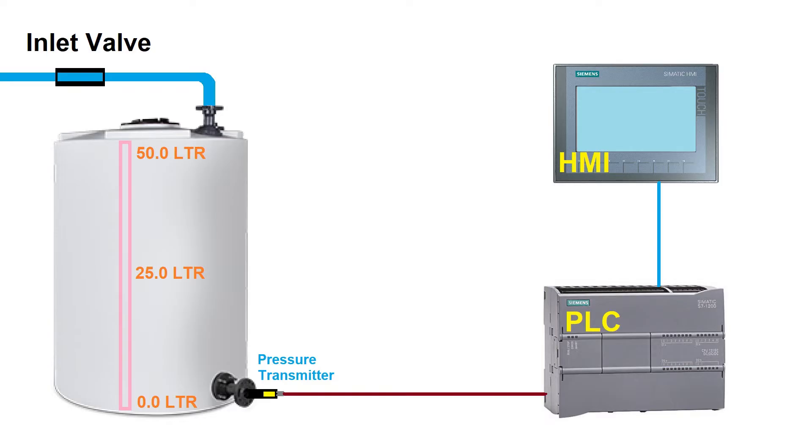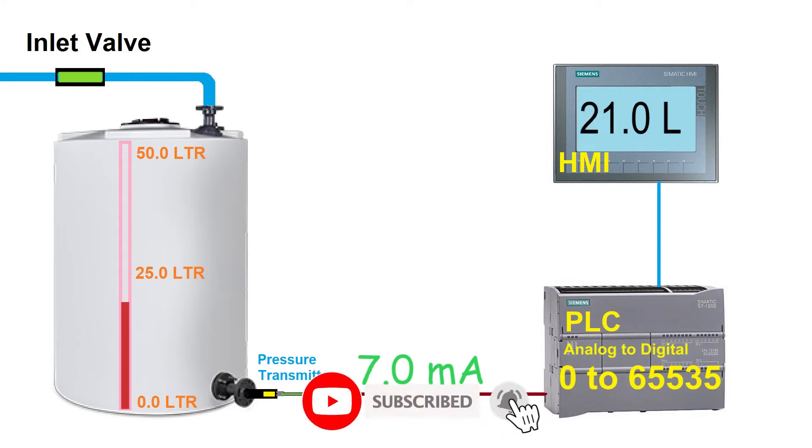Let's first understand what happens and how an analog transmitter works and sends signal to the PLC using an animation. Here we have a 50 liter tank and a level transducer with 4 to 20 milliamps output connected to it.